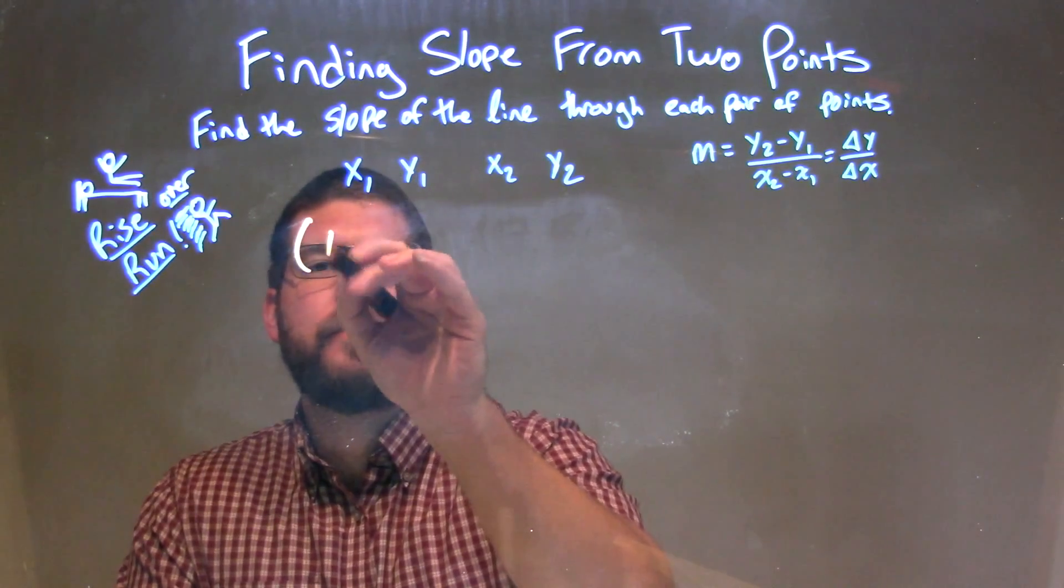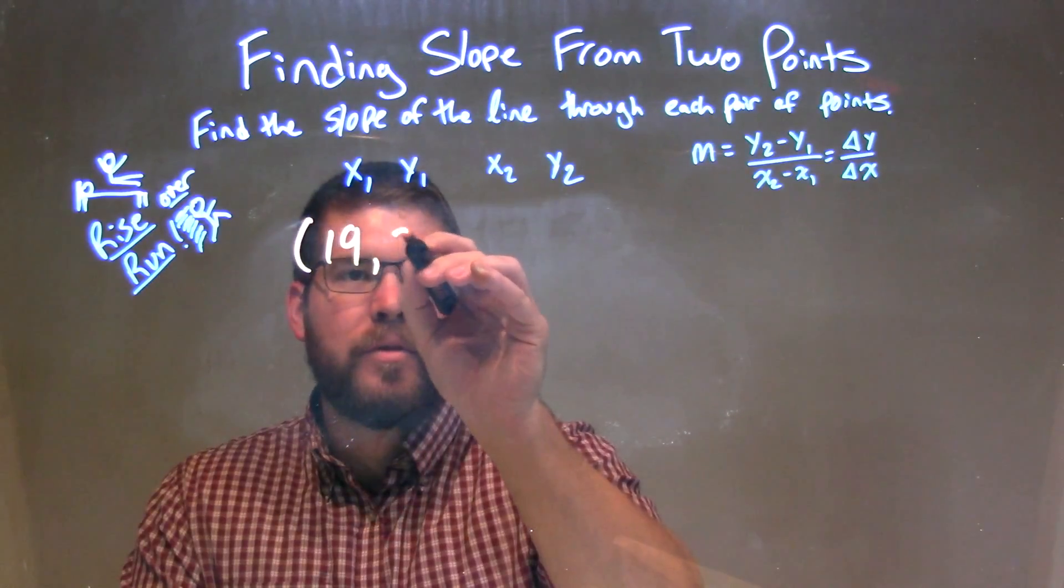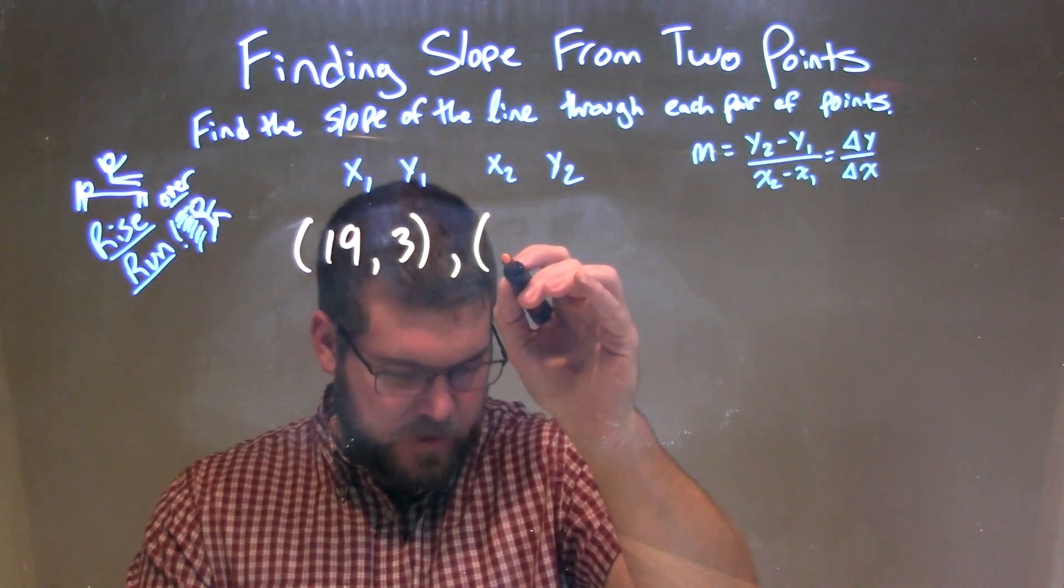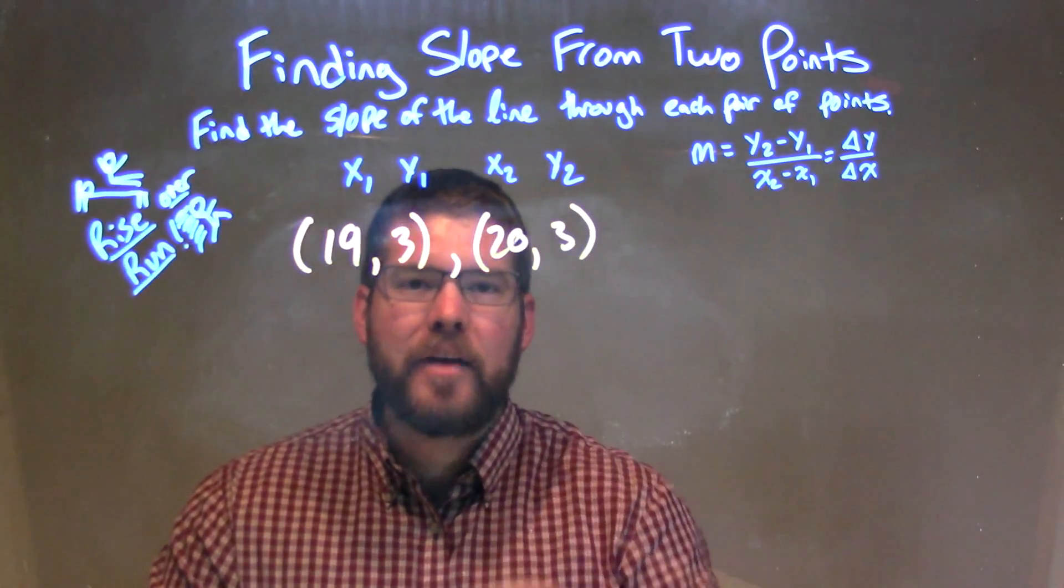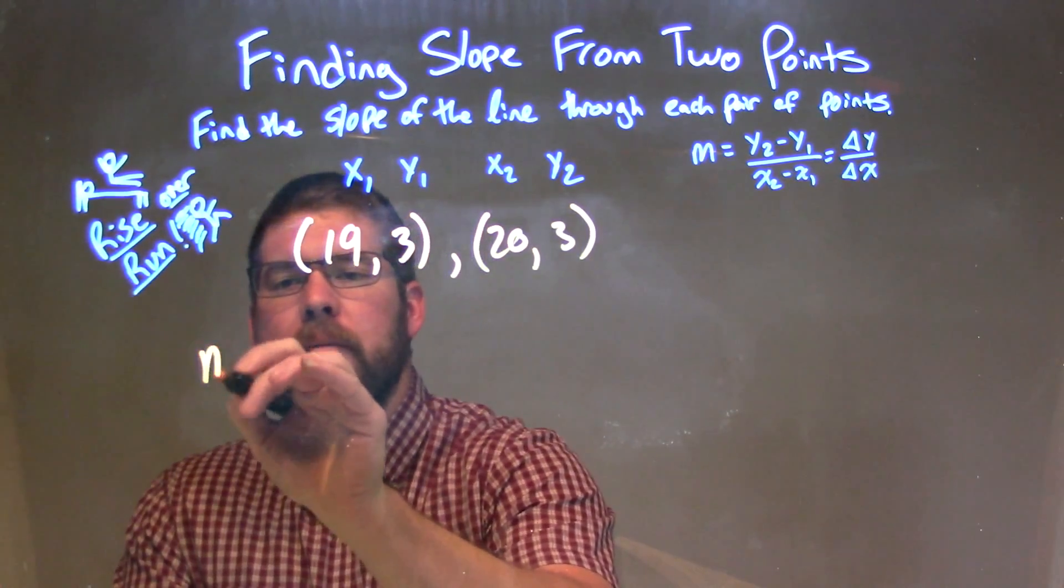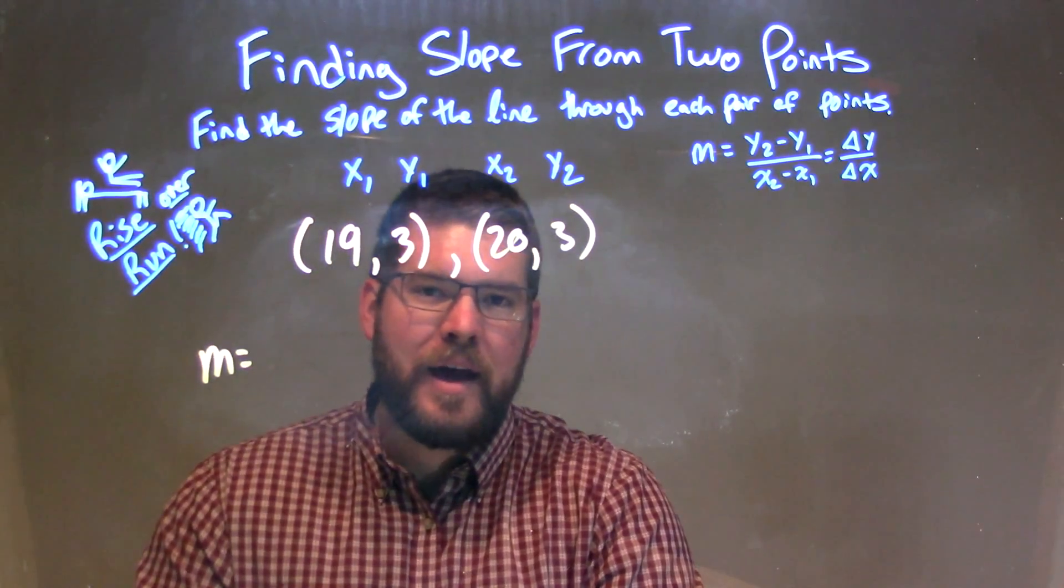So if I was given these two points, (19, 3) and (20, 3), I'm going to apply my slope formula: y2 minus y1 over x2 minus x1.